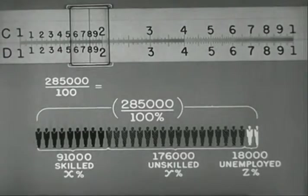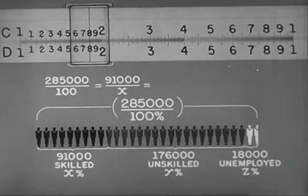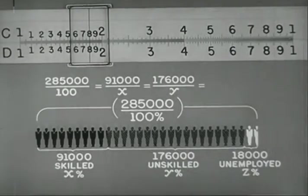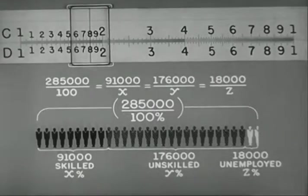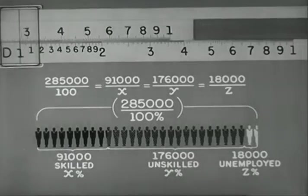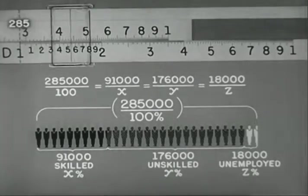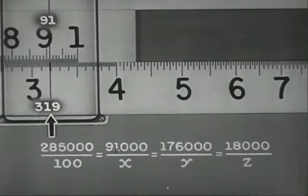Stating the problem in terms of proportion, 285,000 is to 100, as 91,000 is to x, as 176,000 is to y, as 18,000 is to z. To 1 on D, set 285 on C. Under 91 on C, read x as 319.